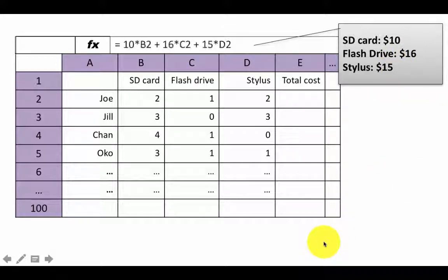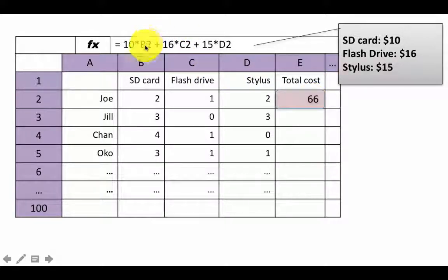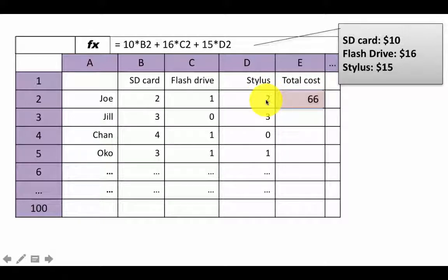Given this scenario, we might write a formula like this for the total cost for the second row, which is for Joe. We say 10 times B2 — B2 being the number of SD cards Joe bought — 16 times C2, which contains the number of flash drives, and 15 times D2, which contains how many styli Joe bought. This formula is correct to compute the total cost.